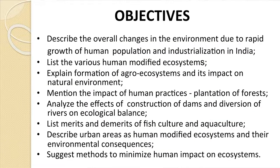Before we go into the detail of the lesson, let us go through the objectives. First, describe the overall changes in the environment due to rapid growth of human population and industrialization in India. List the various human modified ecosystems. Explain formation of agro ecosystems and their impact on the natural environment. Mention the impact of human practices and plantation of forests. Analyze the effects of construction of dams and diversions of rivers on ecological balance. List merits and demerits of fish culture and aquaculture. Describe urban areas as human modified ecosystems and their environmental consequences.